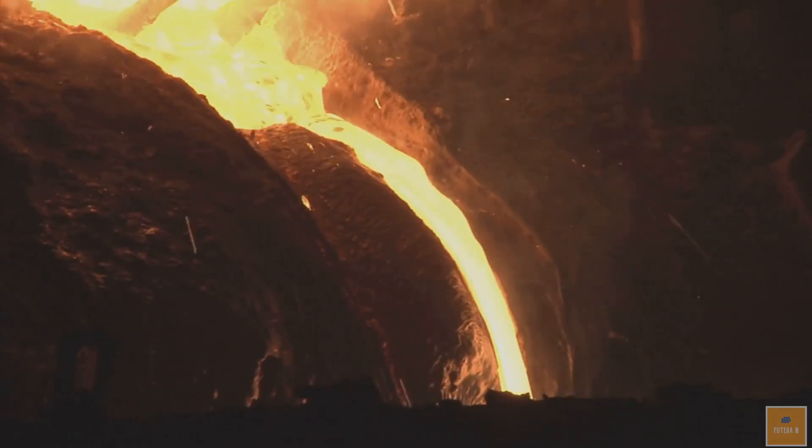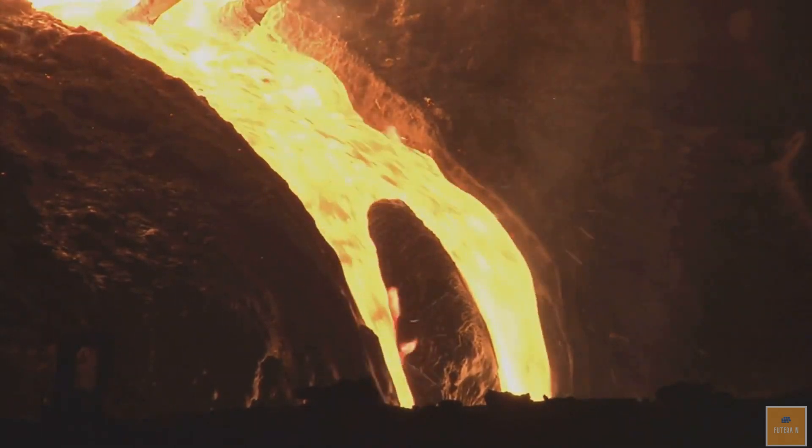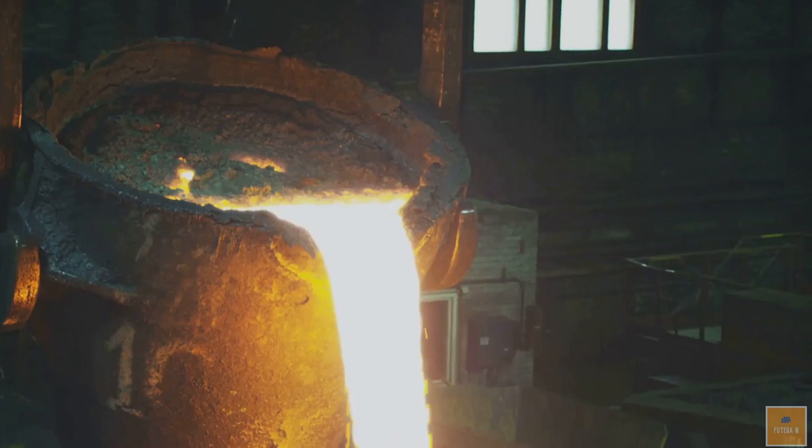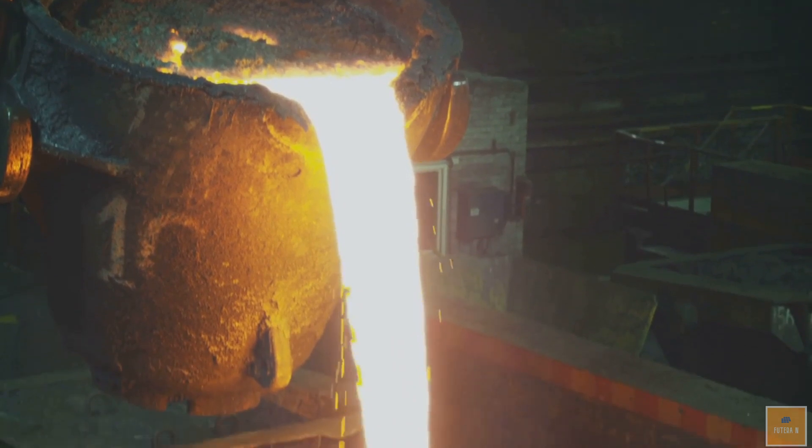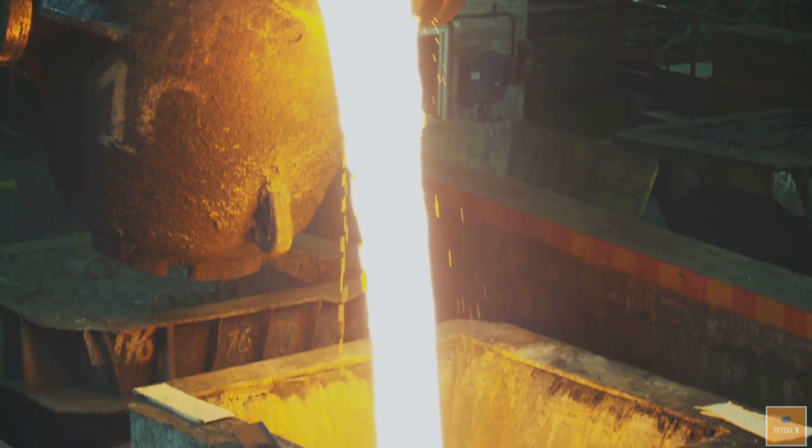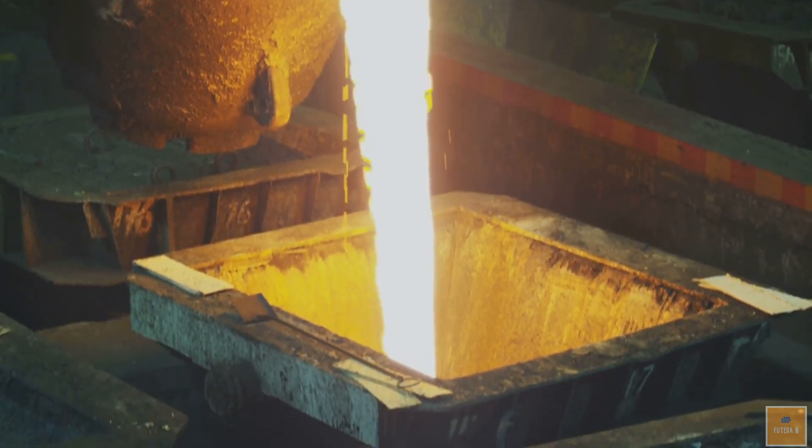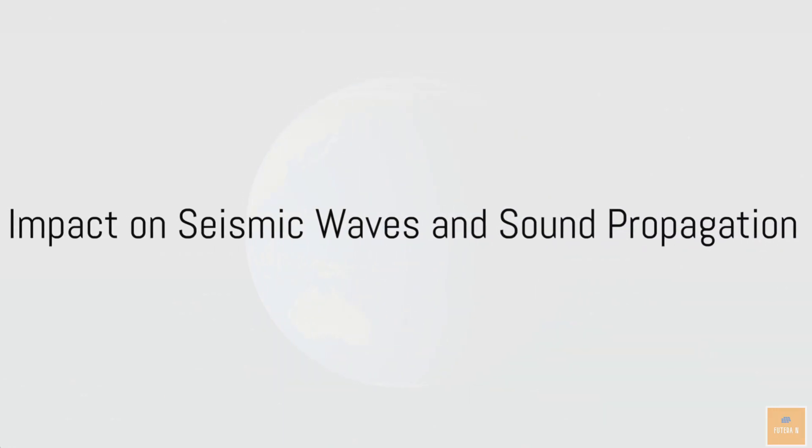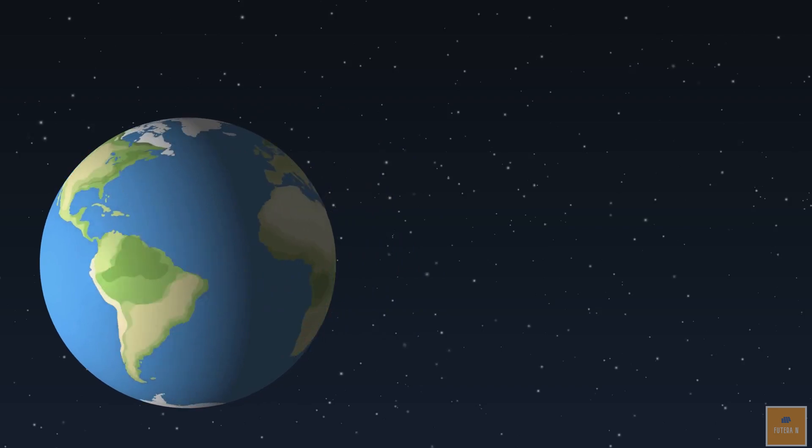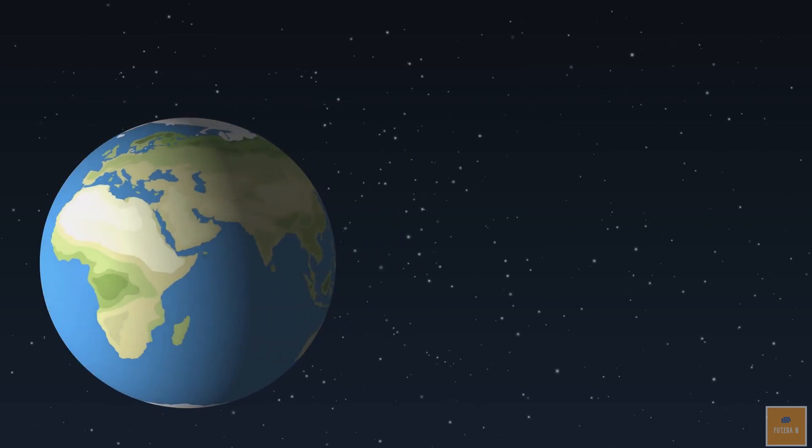The core, located at the center of the Earth, is divided into the outer core and the inner core. The outer core is liquid and composed of molten iron and nickel, while the inner core is solid and composed primarily of iron. The density and composition of the Earth's layers play a crucial role in determining the behavior of seismic waves and the propagation of sound.